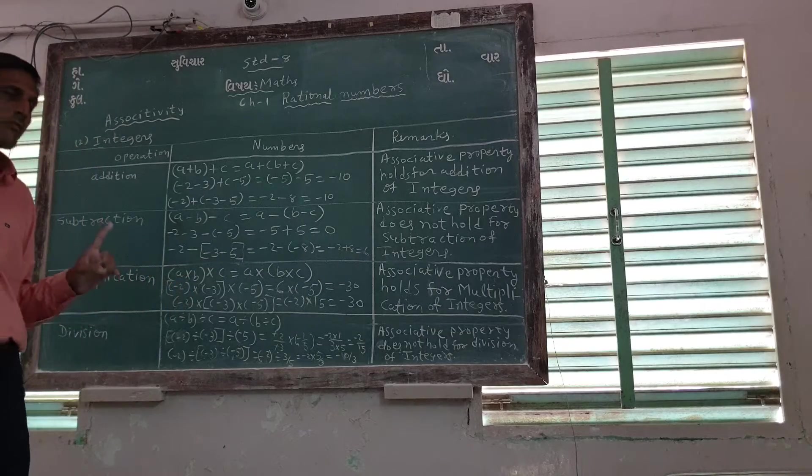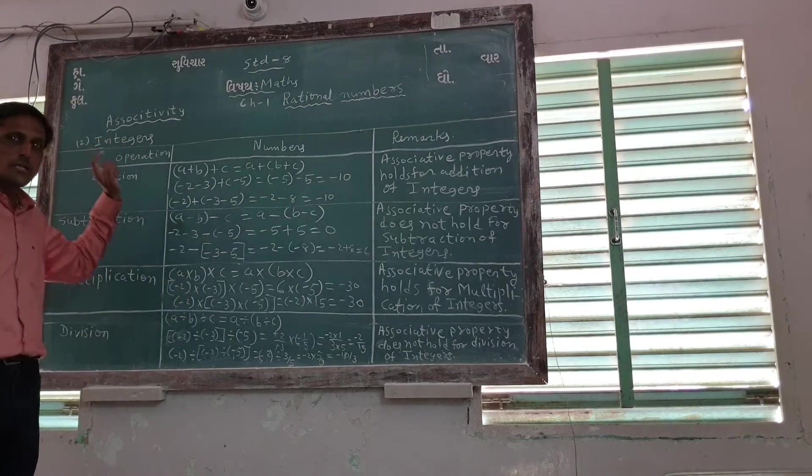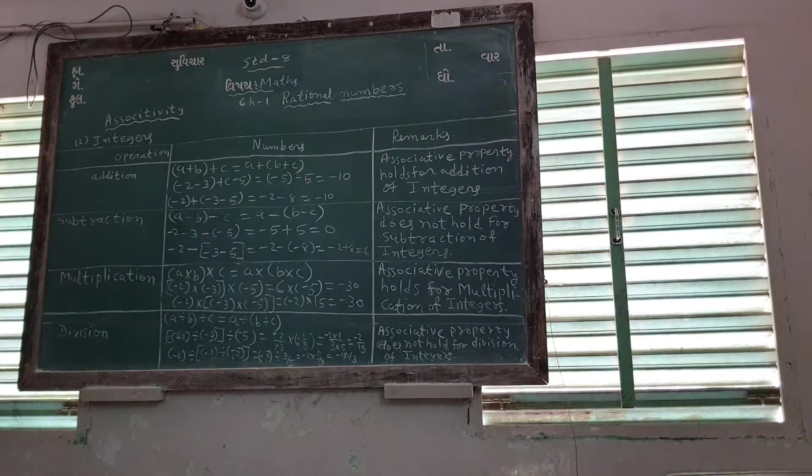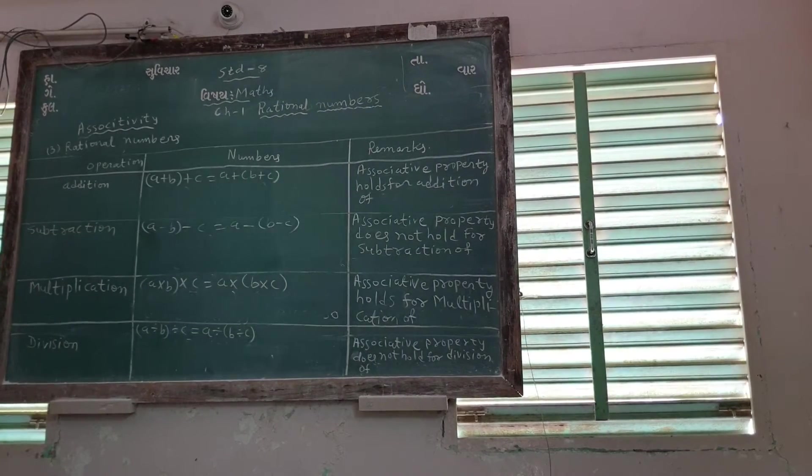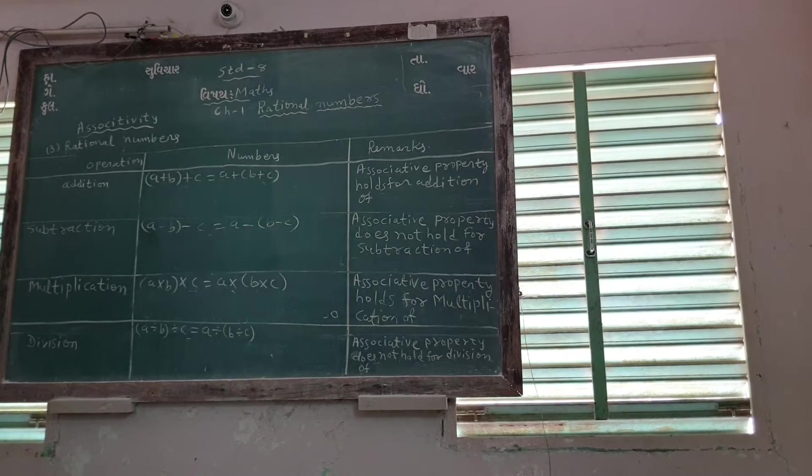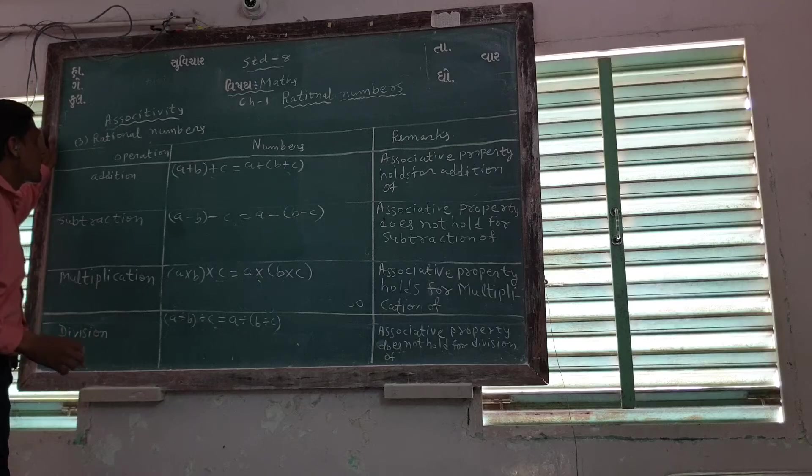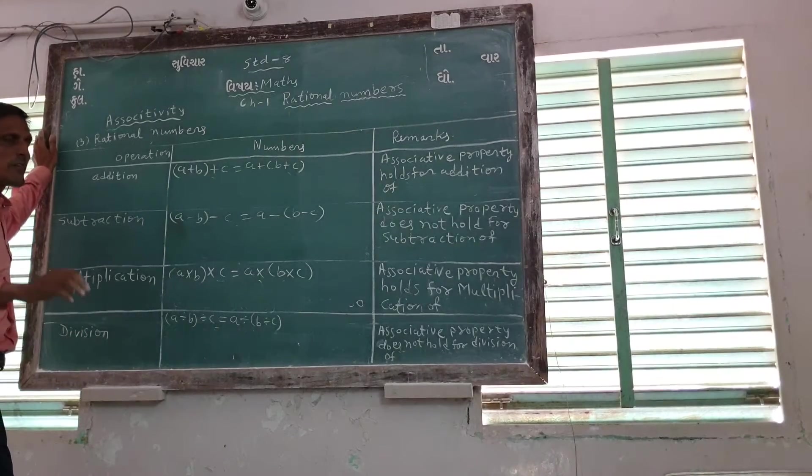Now we will do for register numbers. Write down. Hello friends, now we are doing associative property waiting for register numbers. We will wait for the try this in our textbook.